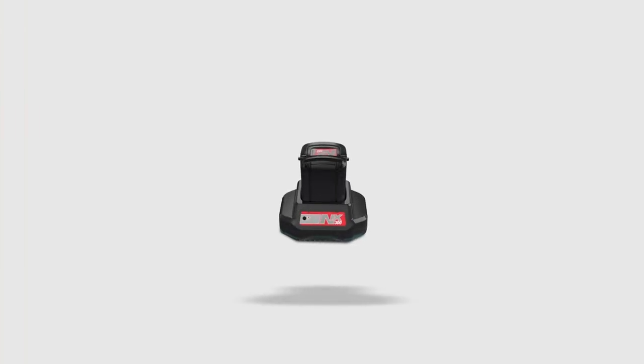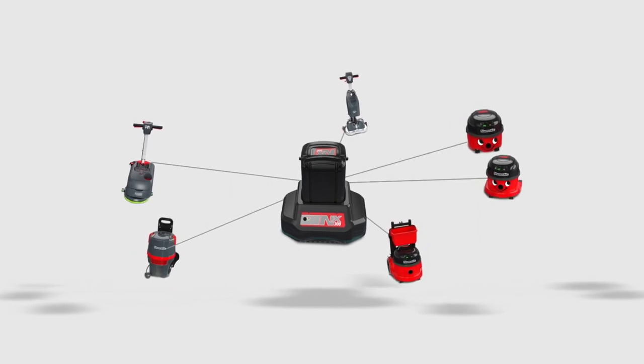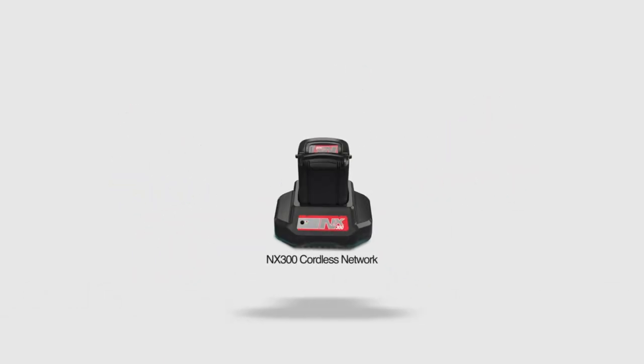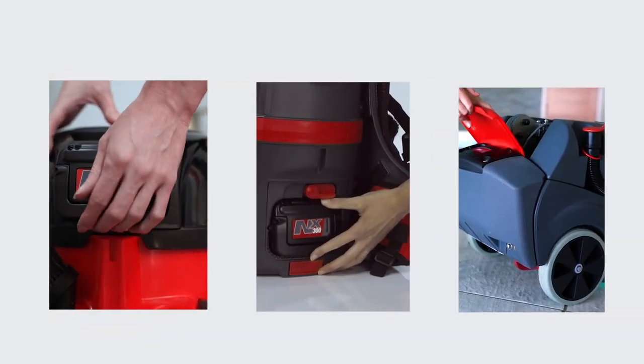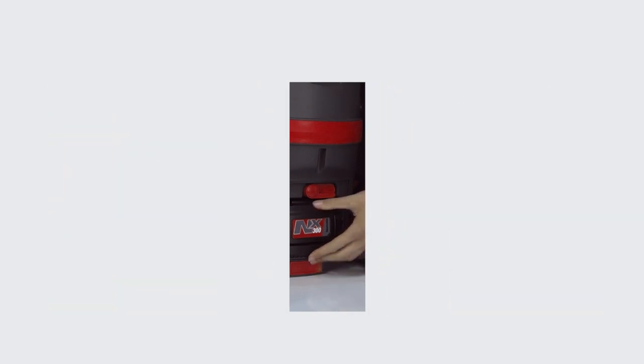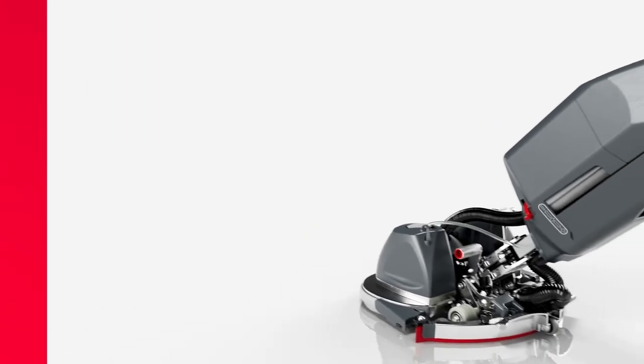The 244NX is part of the NX300 PRO cordless network, bringing the productivity of lithium cordless to all your cleaning, while reducing the cost. Interchangeable batteries can be swapped between HEPA vacuums, backpack vacuums and larger scrubber dryers, all from the single NX300 battery pack.